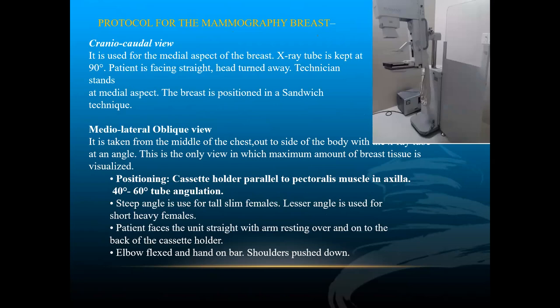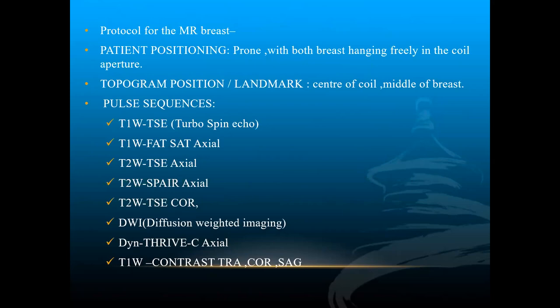A Philips Achieva MRI machine was used. The mammography protocol includes two views: the cranio-caudal (CC) view and the medio-lateral oblique (MLO) view. For the CC view, the patient stands upright in front of the machine and the breast is positioned in a sandwich technique. The X-ray tube is angled at 40–60 degrees; in this study a 30-degree angulation with the horizontal was used, with the X-ray tube parallel to the pectoralis muscle toward the axilla.